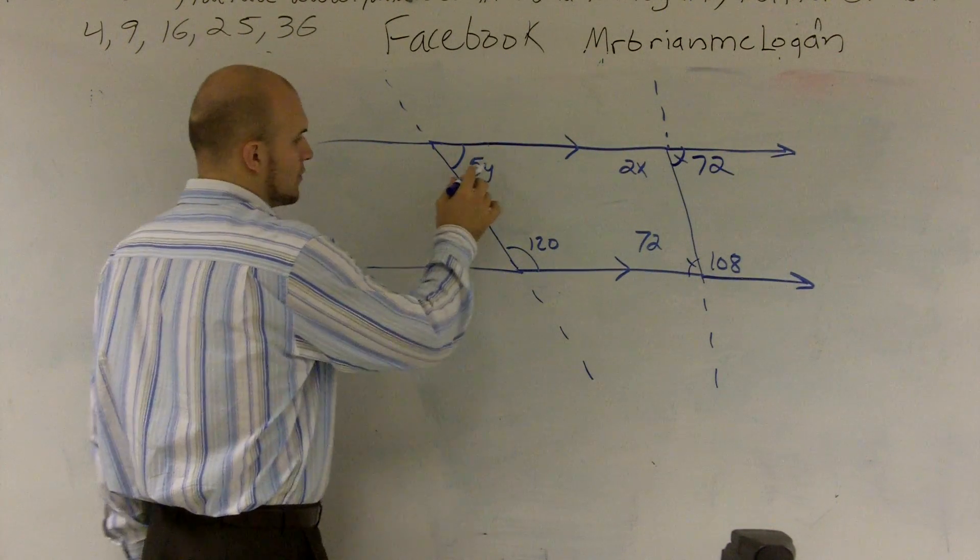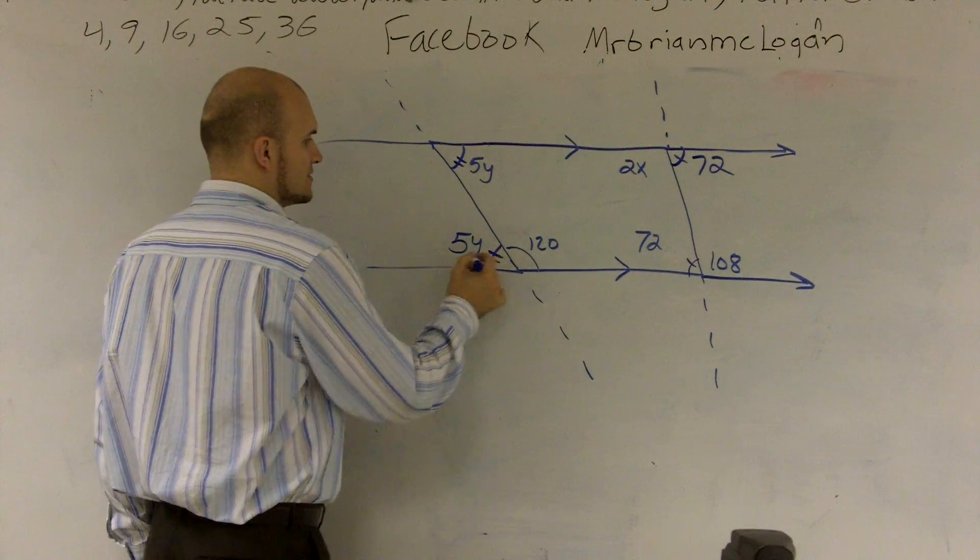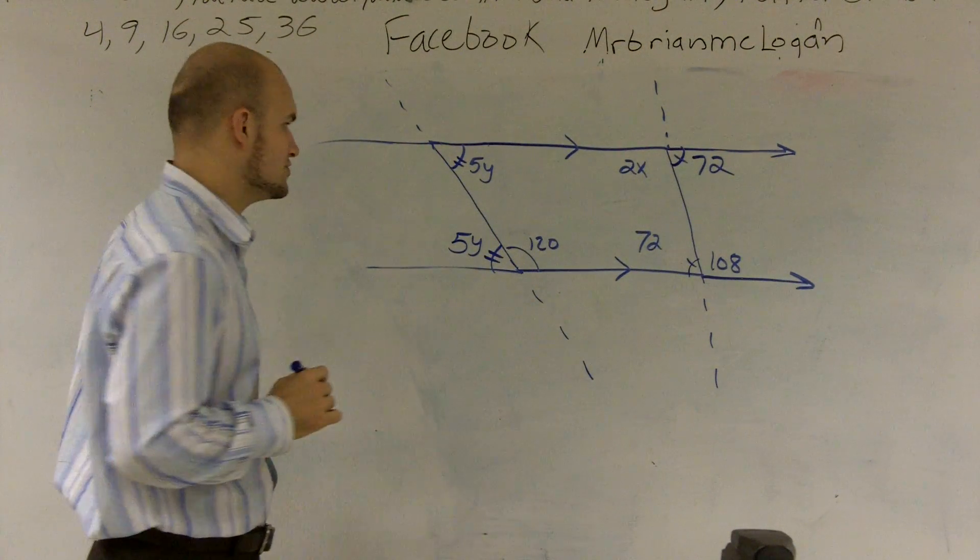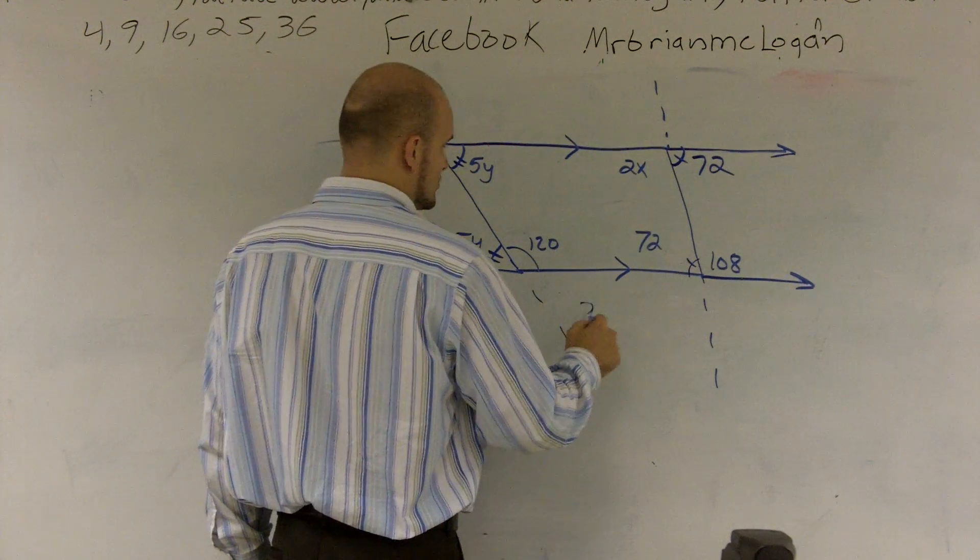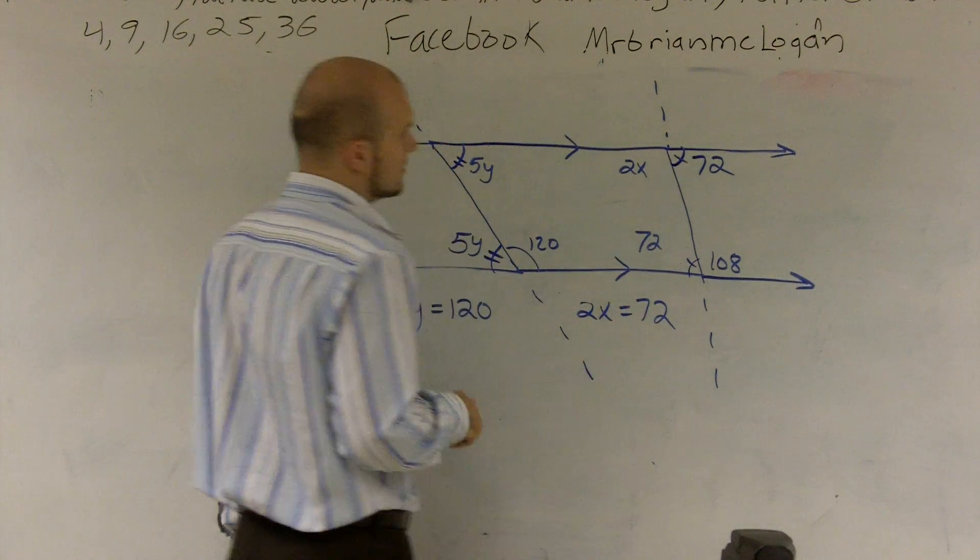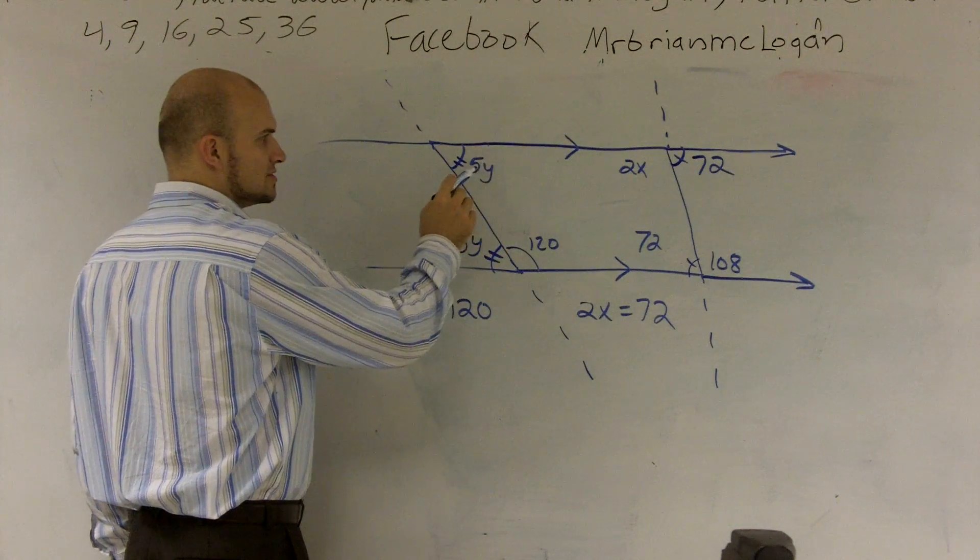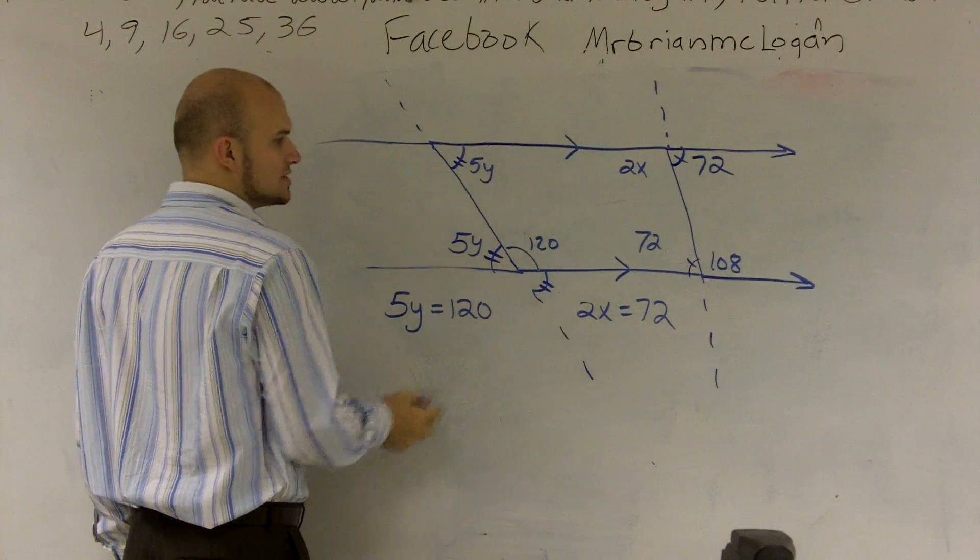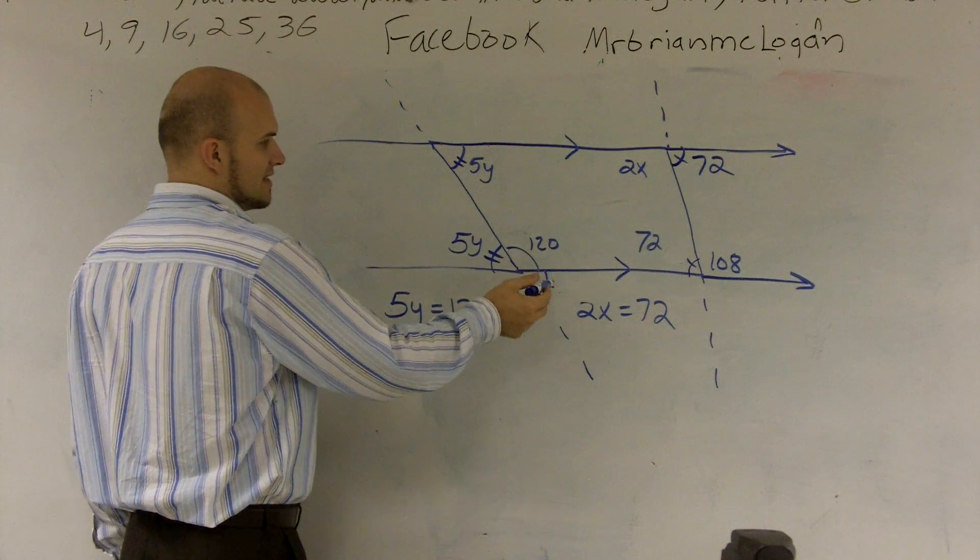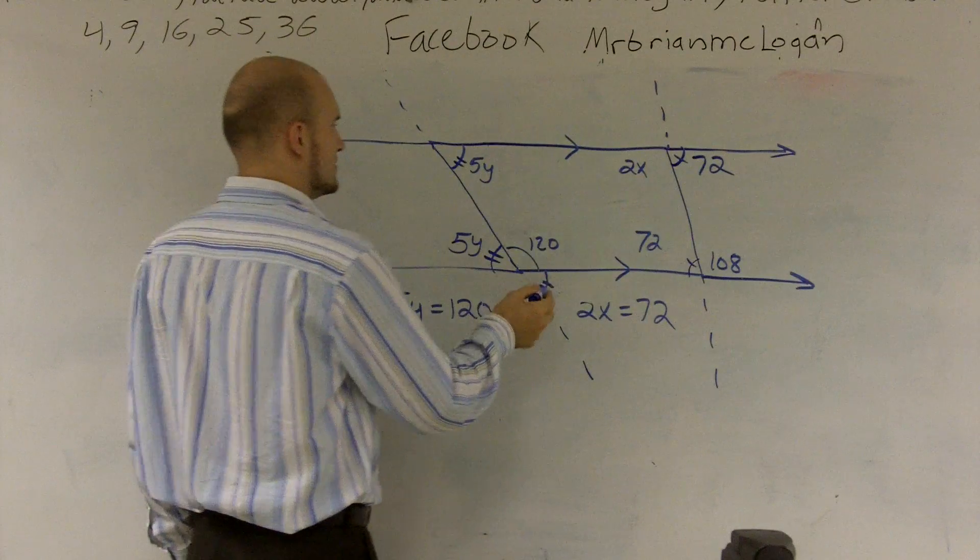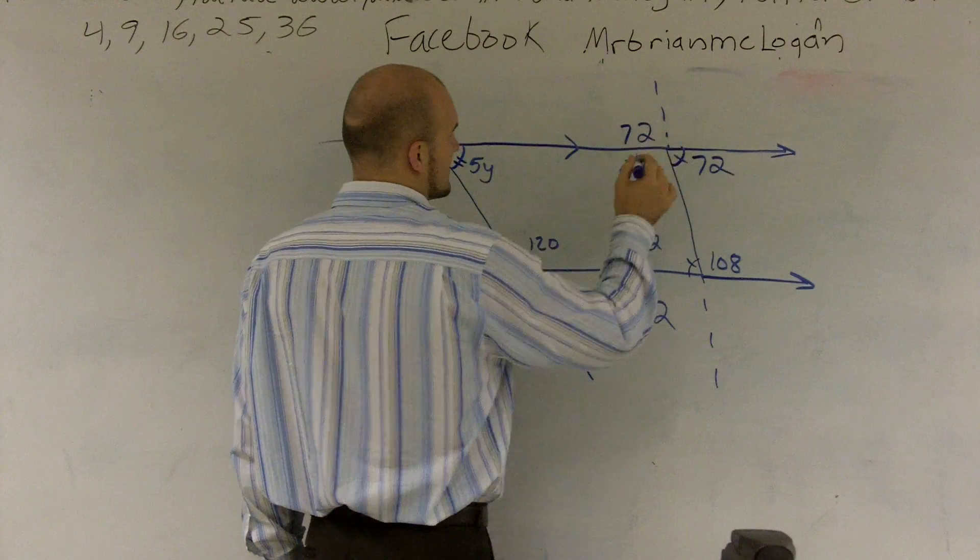I can also say that 5y, this angle, and this angle are equal to each other because these are alternate interior angles. So therefore, I can set up two equations. I can say 5y is equal to 120 and 2x is equal to 72. I also could have done it by using corresponding angles. You could have said 5y and these two are equal to each other. And since these two add up to, then you could say that 5y plus 120 equals 180. Same thing. Or you also could have said 72, and this is 72 as well.